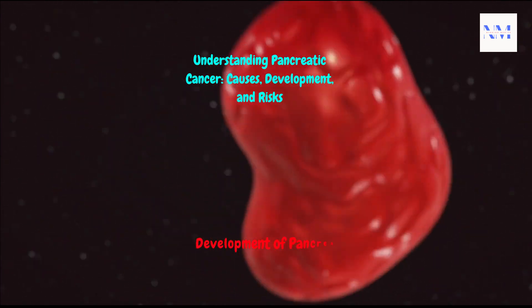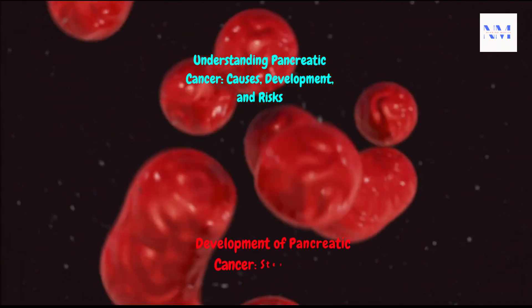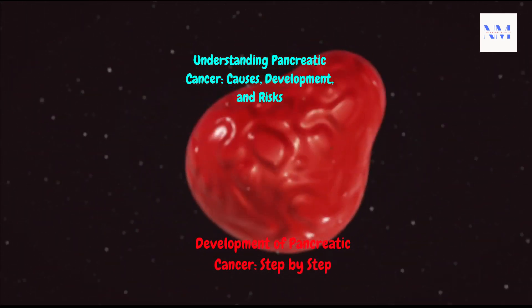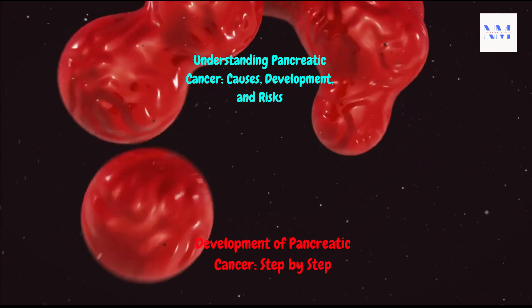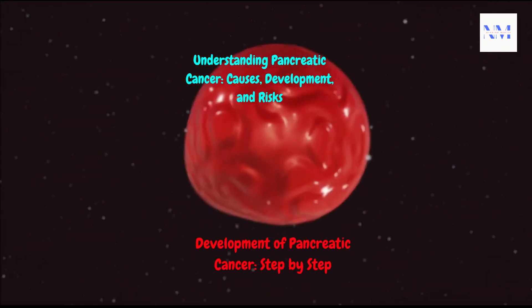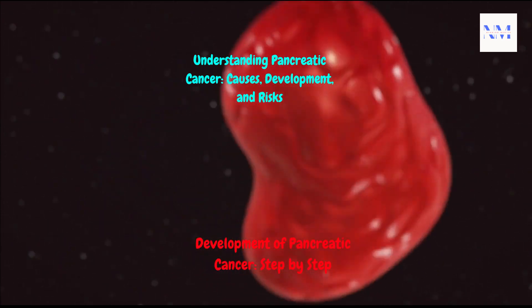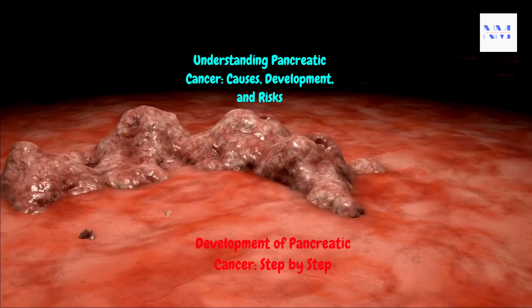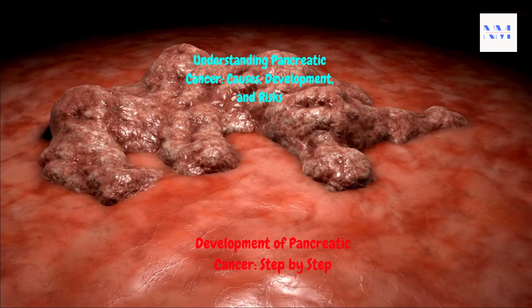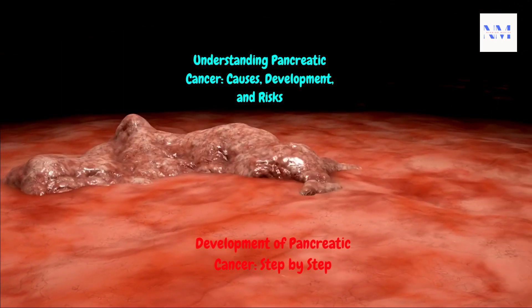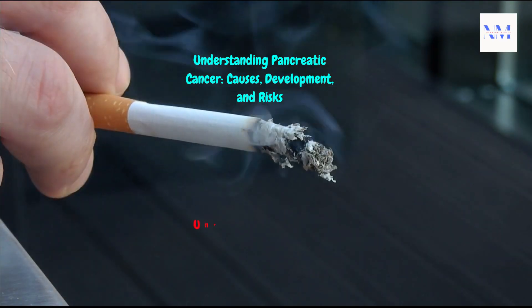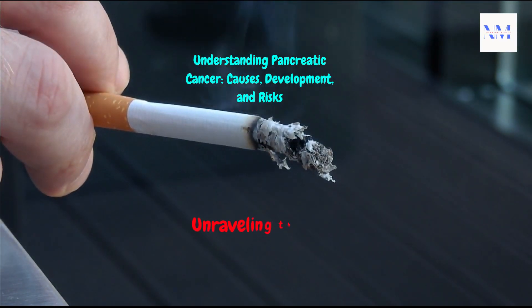Development of pancreatic cancer, step by step. Understanding how pancreatic cancer develops requires a closer look at the process. It often starts in the cells lining the pancreatic ducts — the tubes that carry digestive enzymes from the pancreas to the small intestine. Over time, these abnormal cells can multiply, leading to the formation of a tumor. As the tumor grows, it can spread to nearby organs or even to distant parts of the body, a process known as metastasis.